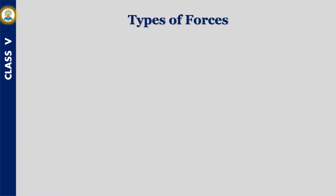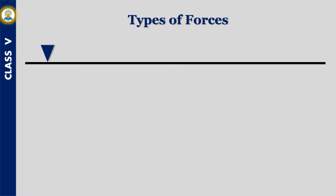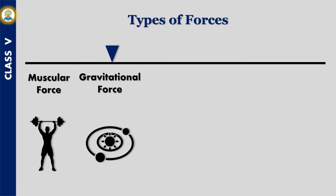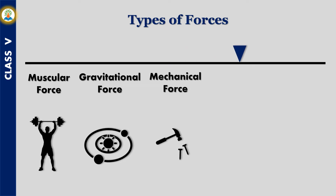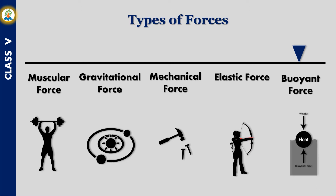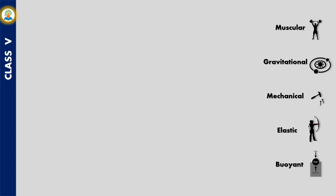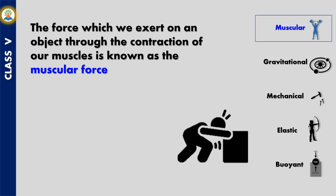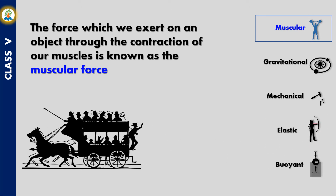There are many different types of forces: muscular force, gravitational force, mechanical force, elastic force, and buoyant force. The force which we exert on an object through the contraction of our muscles is known as muscular force. You use muscular force to move objects and to open a door. A horse applies muscular force to pull a cart.